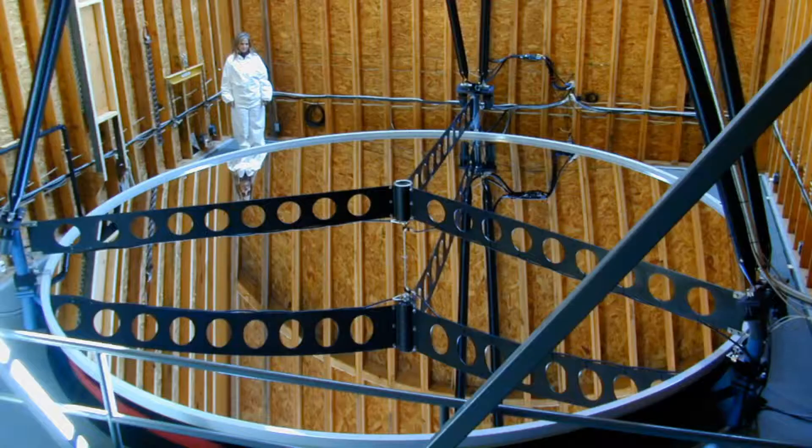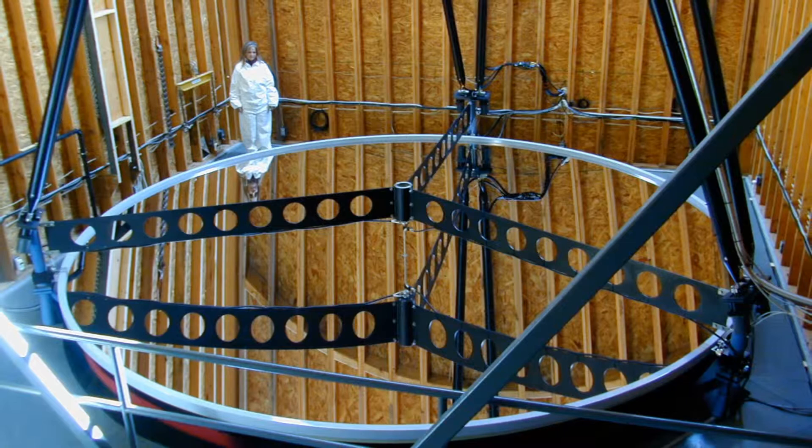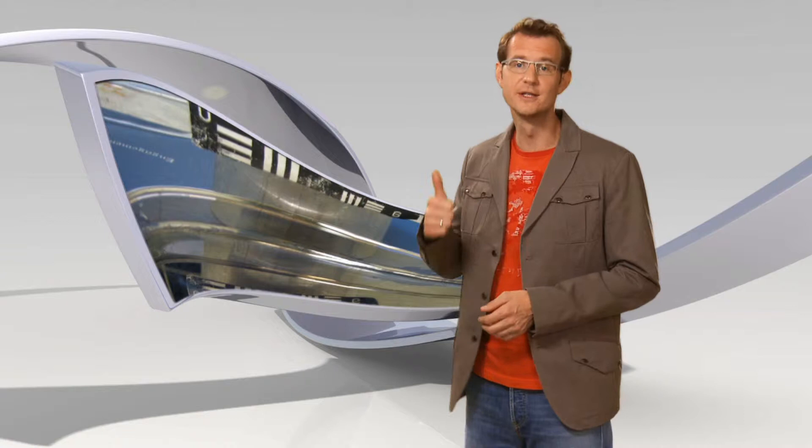The starlight is reflected not by a solid mirror, but rather by the curved surface of a rotating reservoir of liquid mercury. Because of their design, mercury telescopes can only look straight up, but their advantage is that they are relatively cheap and easy to build.